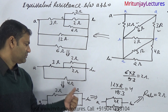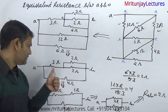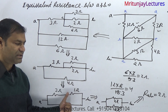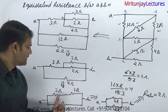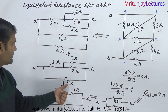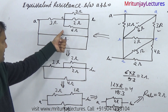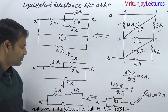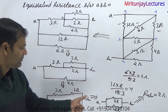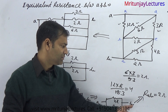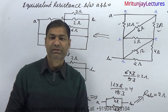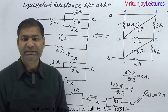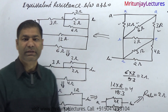Both are in parallel so that is 1 ohm. 3 and 1 are in series, that is why 4 ohm. And this one — combination of these two — we got 4 ohm. So 4 ohm and 4 ohm in parallel. Final combination is 2 ohm. That is the right answer.